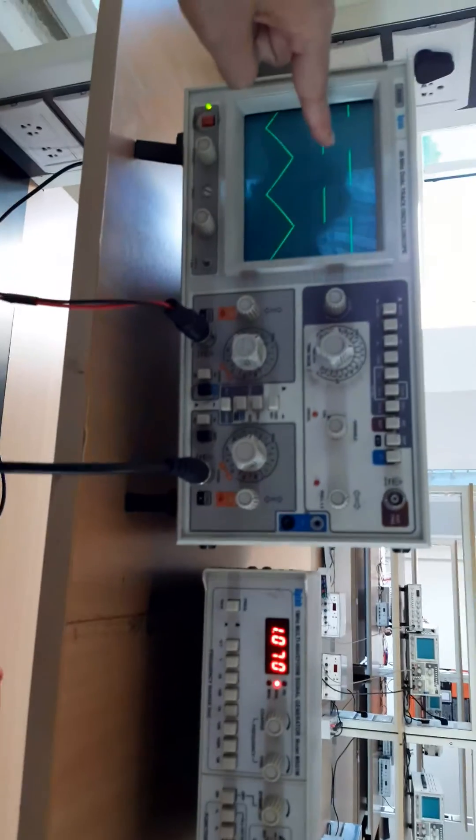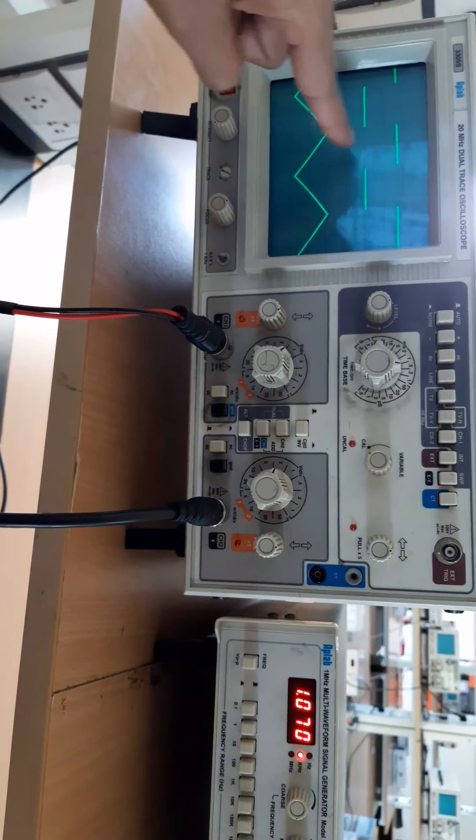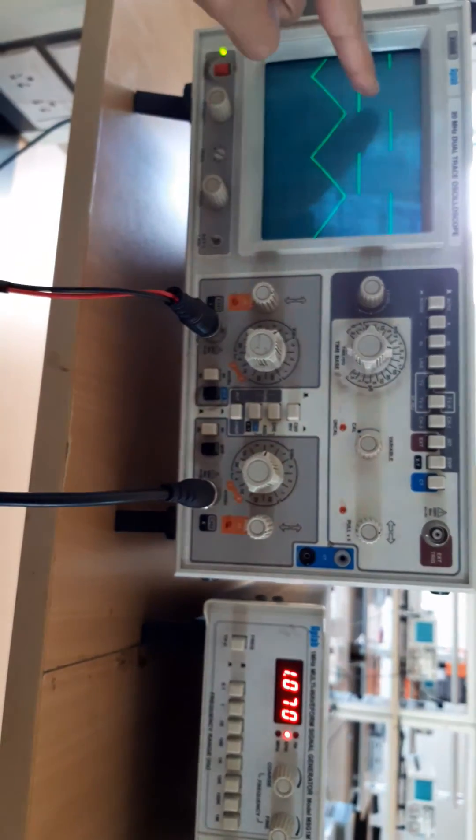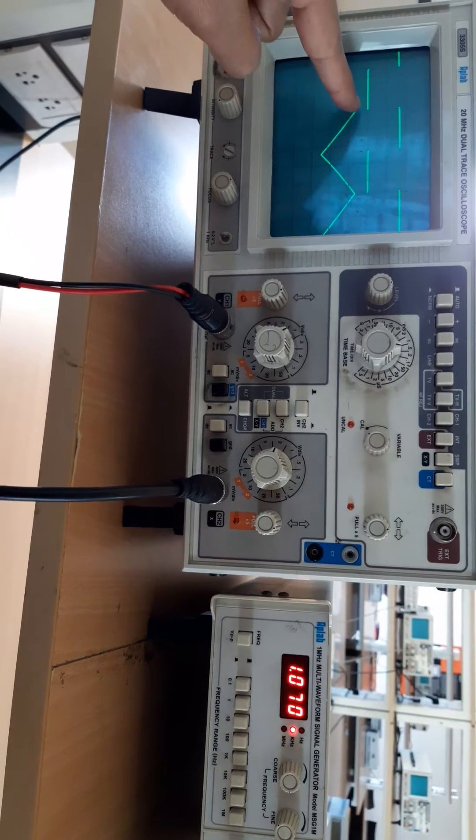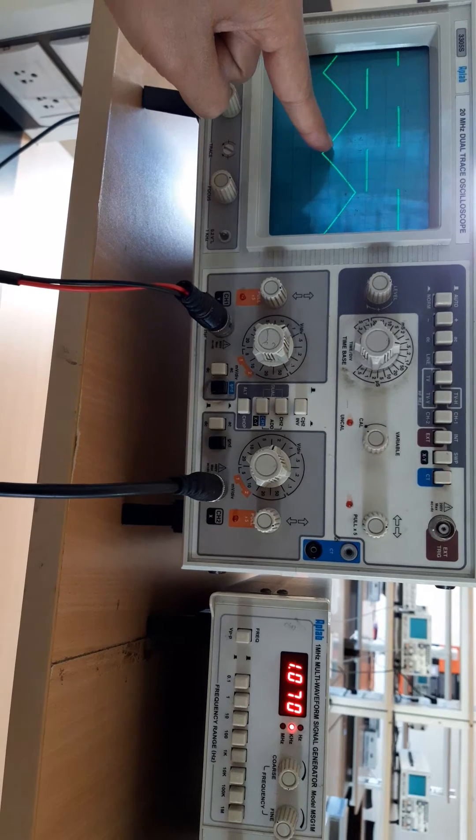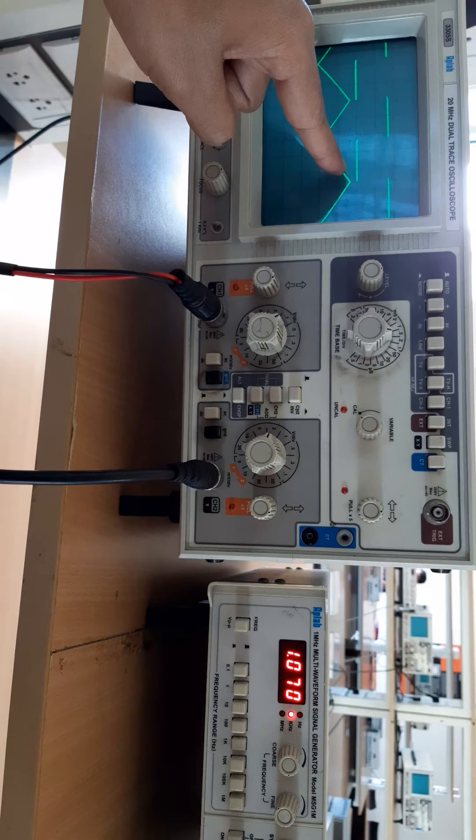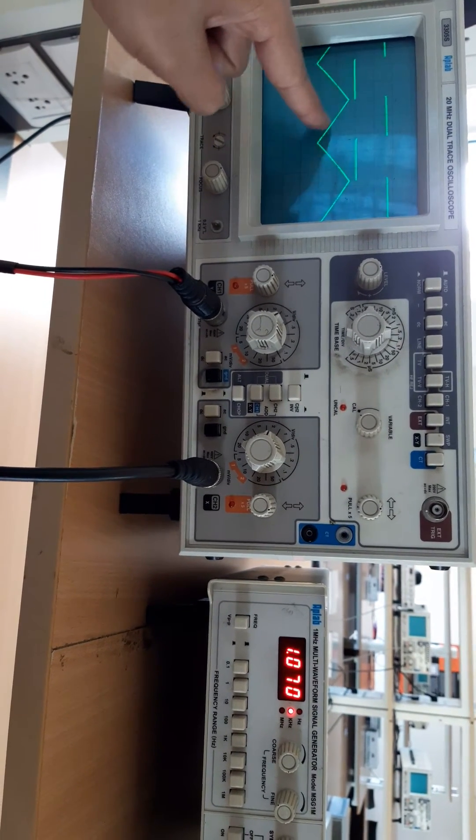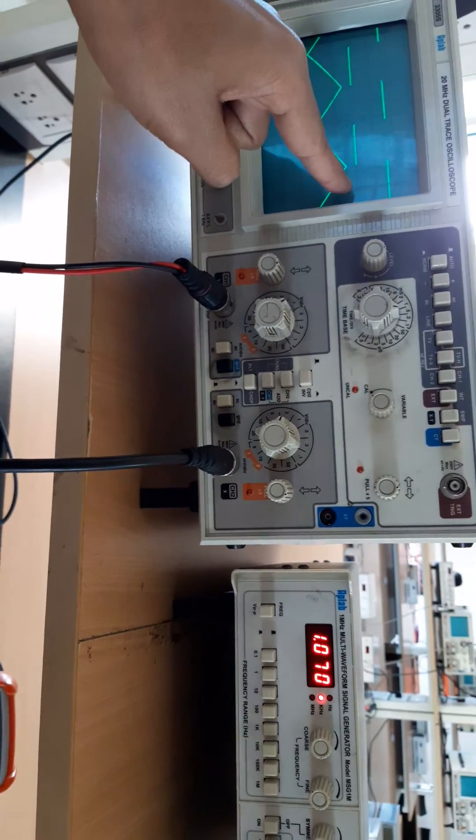Now if I observe the output, channel number 1 is for input square wave and the output is triangular wave. Wherever there's a rising edge of the square wave, we can see the falling edge of the triangular wave. Because in the formula we have seen v0 equals minus 1 by RC, for the complete one square wave, one triangular wave will be observed in the output waveform. The same thing will be repeated.